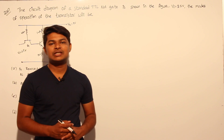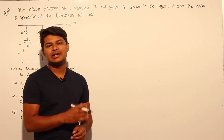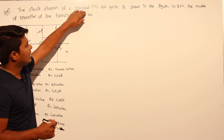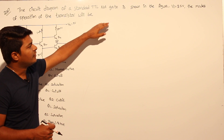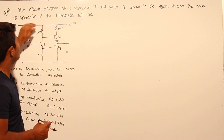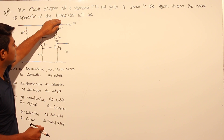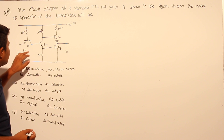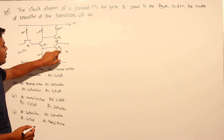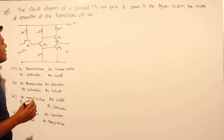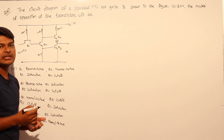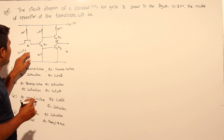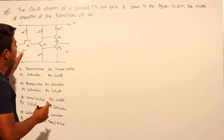This question is from GATE 2007. The circuit diagram of a standard TTL NOT gate is shown in the figure. VA equals 2.5 volts. They are asking about the mode of operation of four transistors Q1, Q2, Q3, and Q4 — in which mode each transistor is operating.